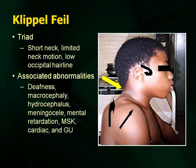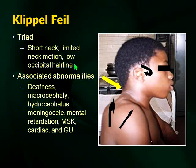These are other congenital abnormalities that may appear on your examination. Klippel-Feil constitutes a triad. The primary abnormality is in the cervical spine — fusion of the bone to the C-spine — which leads to a short neck, limited neck motion, and low occipital hairline. There are multiple anomalies associated with Klippel-Feil including deafness, macrocephaly, hydrocephalus, meningocele, mental retardation, MSK problems, and cardiac and GU problems. For your purposes, just remember the triad and that it's fusion of the cervical spine.